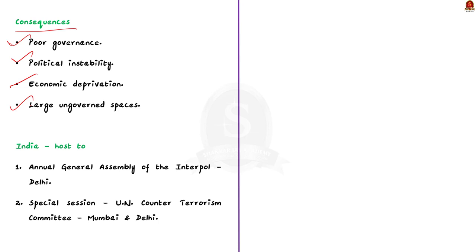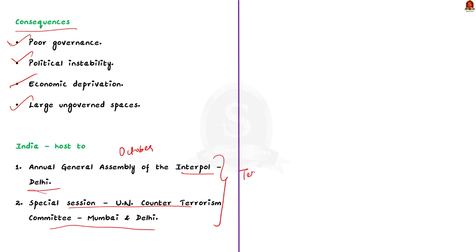India is determined to fight against terrorism. India was also host to two global counter-terrorism events in October: the annual general assembly of Interpol in Delhi, and a special session of the UN Counter-Terrorism Committee in Mumbai and Delhi. Both events were linked to terrorism, showing India's zero tolerance policy against terrorism. Through this discussion, we came to know about the No Money for Terror Conference.